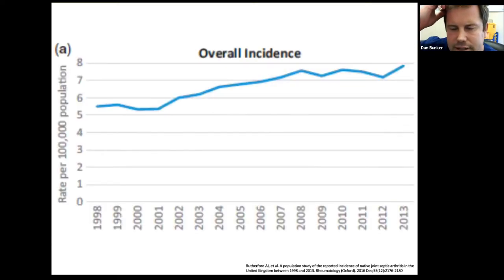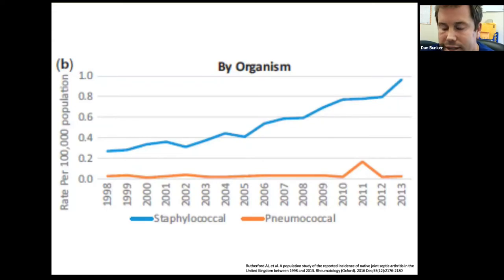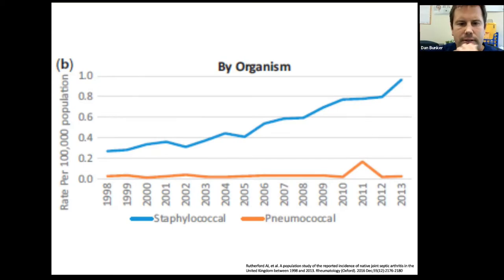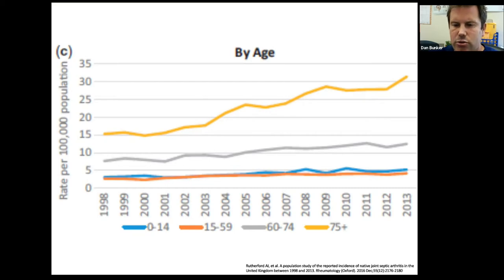The incidence of septic arthritis is increasing — about 50% over the last 15 years, mostly driven by staph. The reason is probably the increase in indwelling lines, catheters, and dialysis, which staph loves. Interestingly, the increasing incidence is not in younger IV drug users but really in the older population — those already at risk who are getting lines for dialysis and various other things.